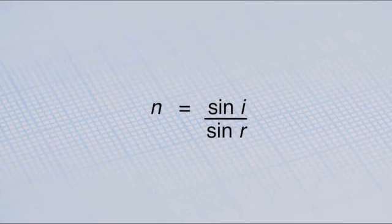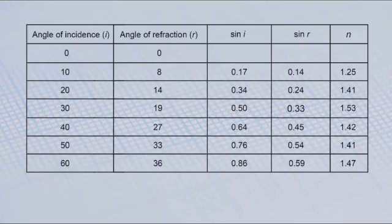The refractive index of a material can be calculated using the equation n equals sine i over sine r. Values are calculated for the refractive index of the material. The refractive index is determined by calculating a mean value.